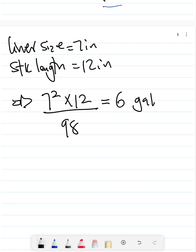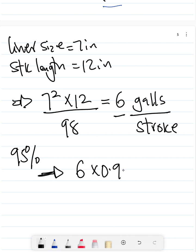But also note that sometimes these pumps will not be delivering their full capacity. Say this pump is delivering at 95% capacity. We multiply the output by that capacity. So in this case, it's 6 times 0.95, which gives us 5.7 gallons per stroke.